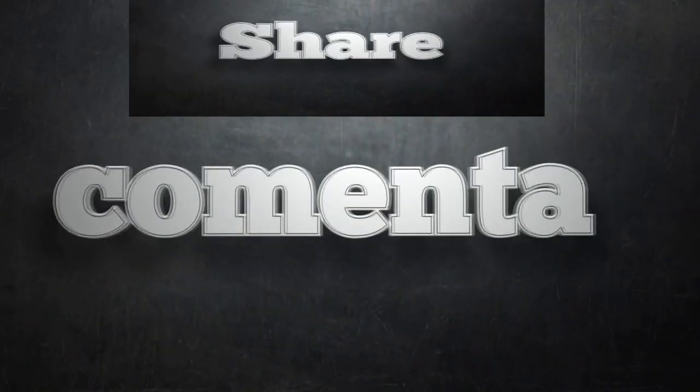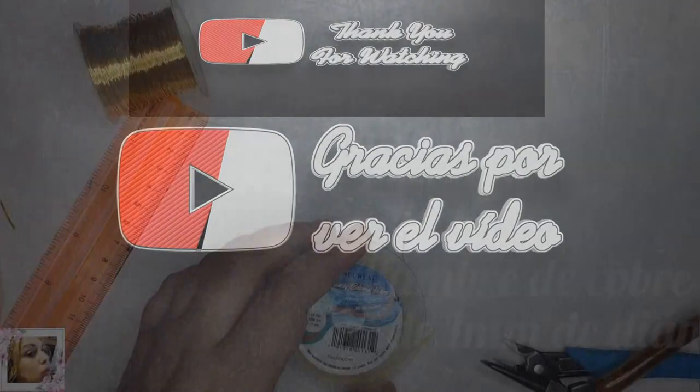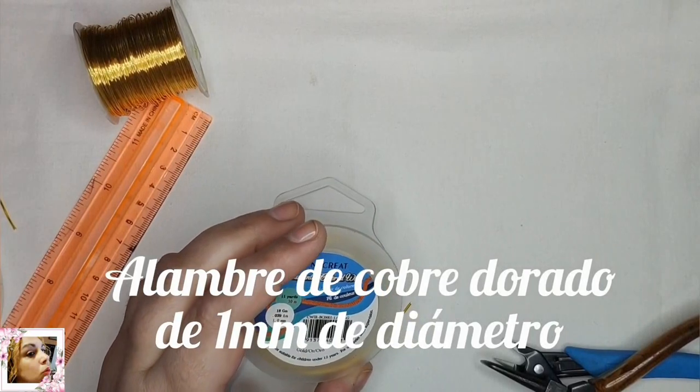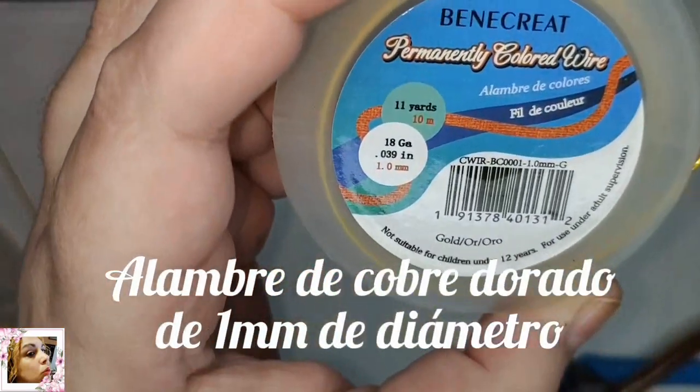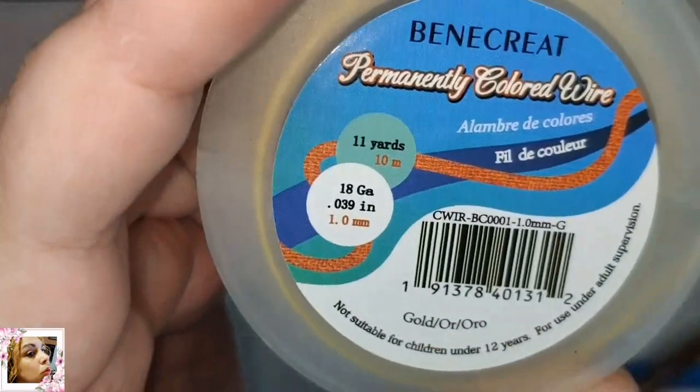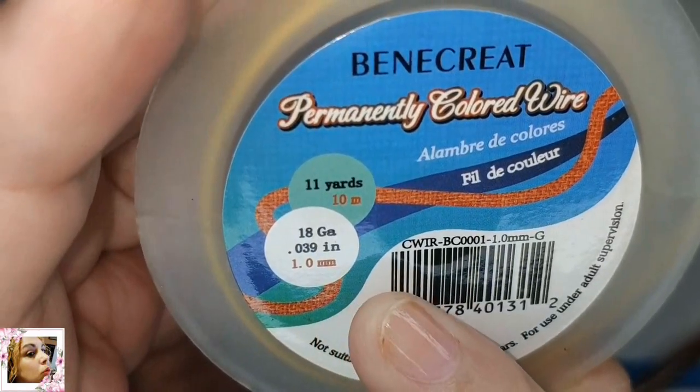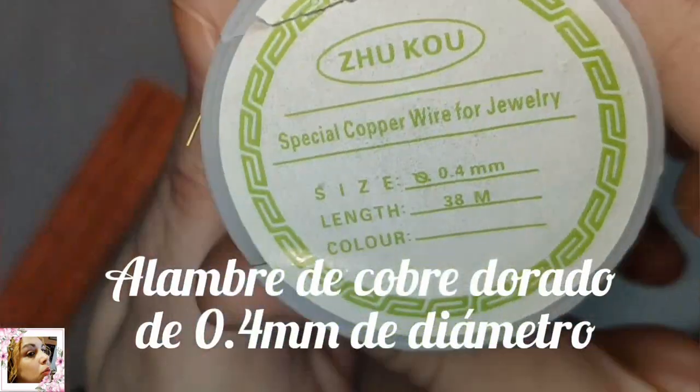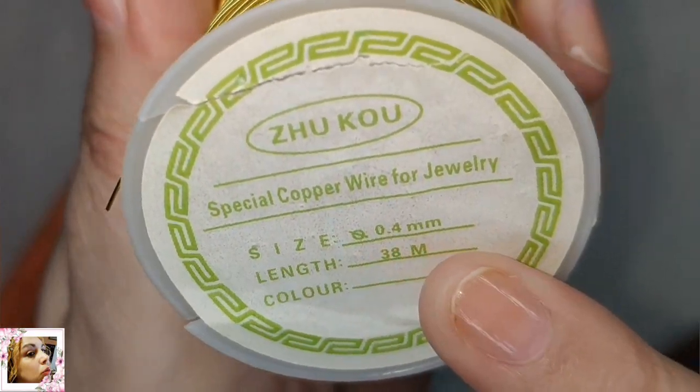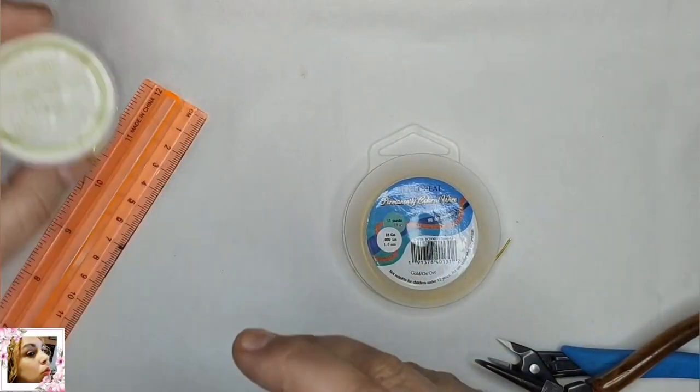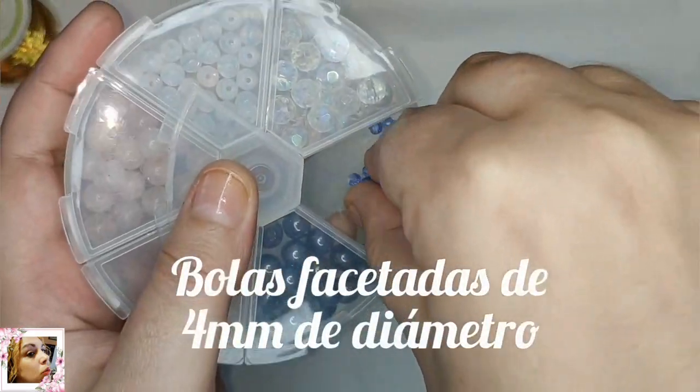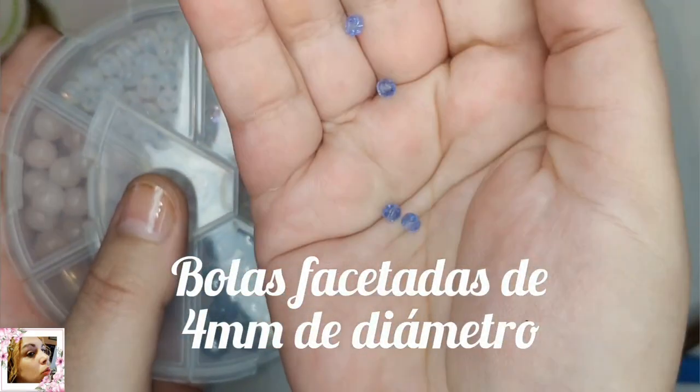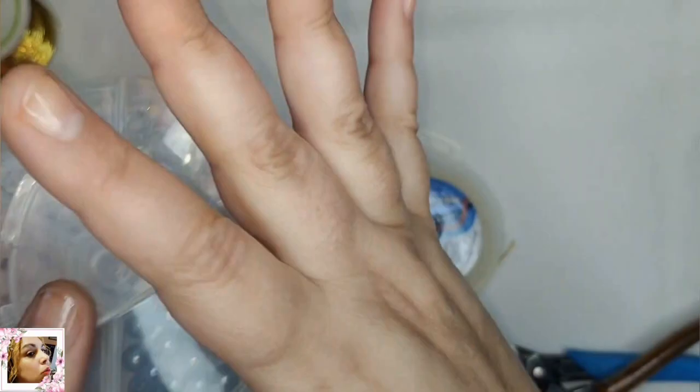Para este trabajo voy a utilizar alambre de cobre dorado de 1 mm de diámetro, alambre de cobre dorado de 0.4 mm de diámetro y avalorios, bolas facetadas de 4 mm de diámetro.